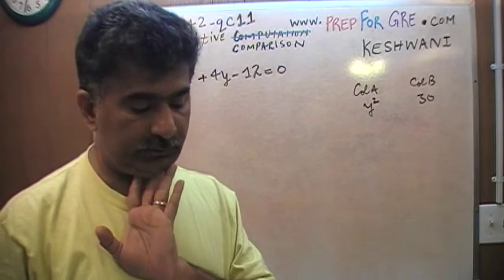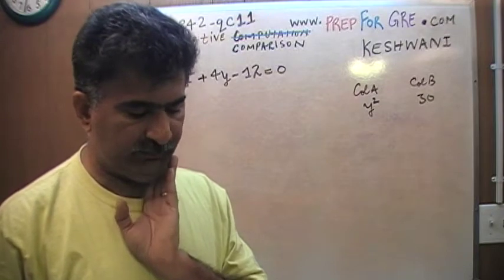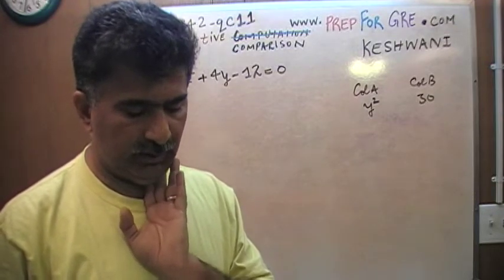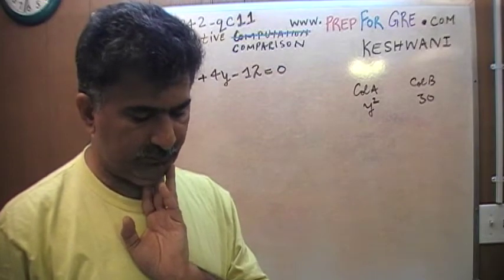Because if you do it trial and error way, you will miss something. You will only find one value of y. You will end up picking the answer as either A or B, but the answer is neither A nor B.